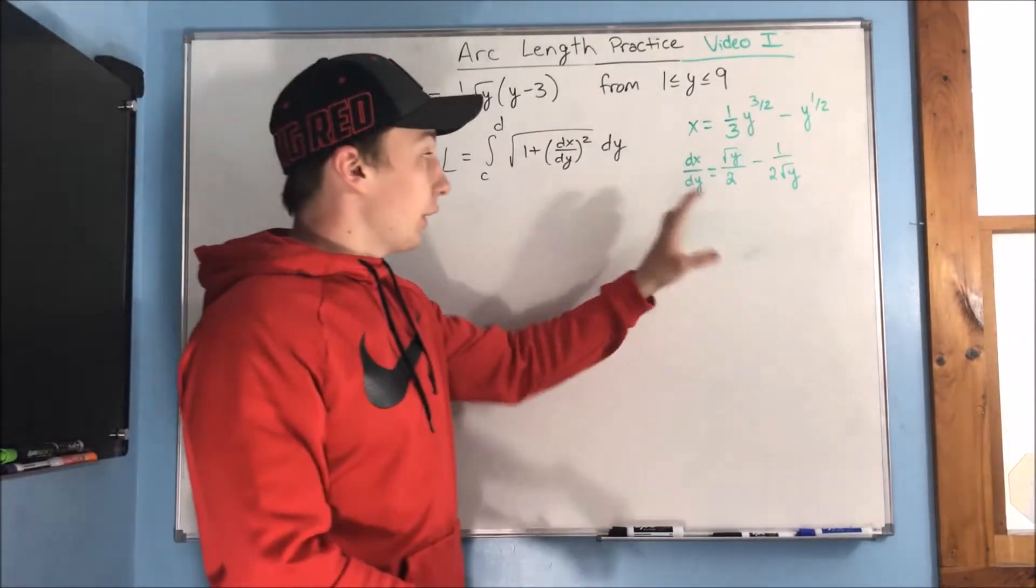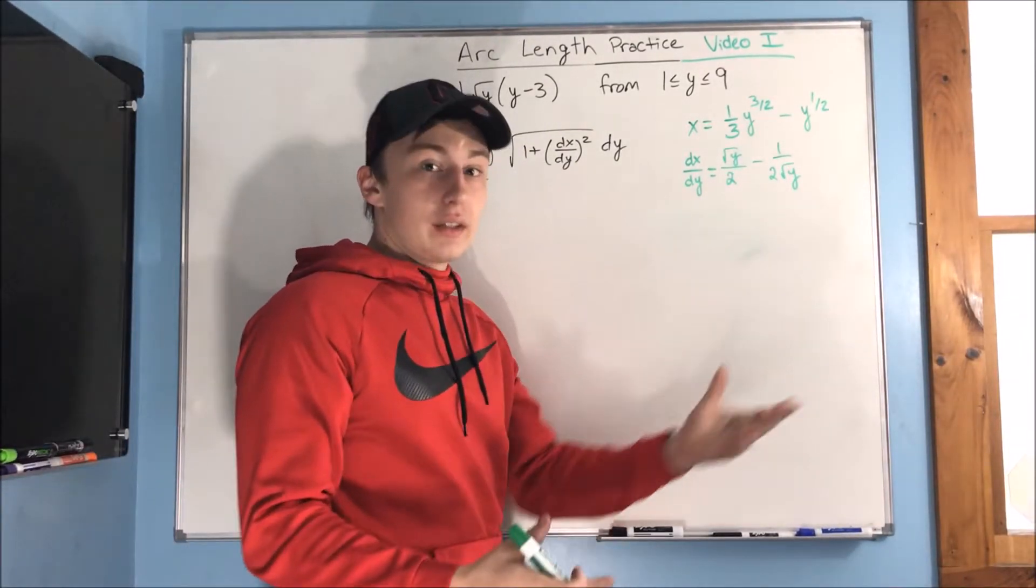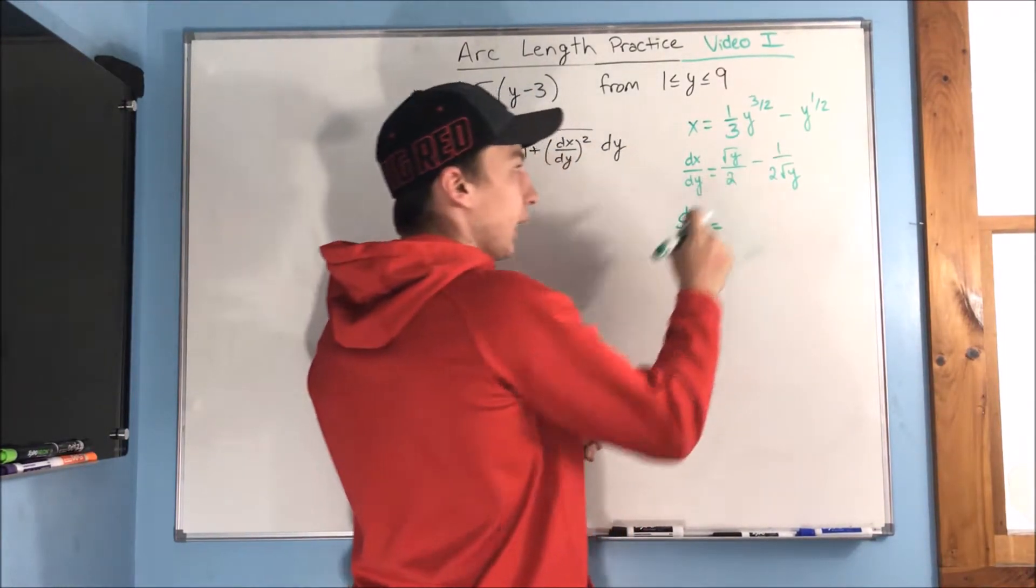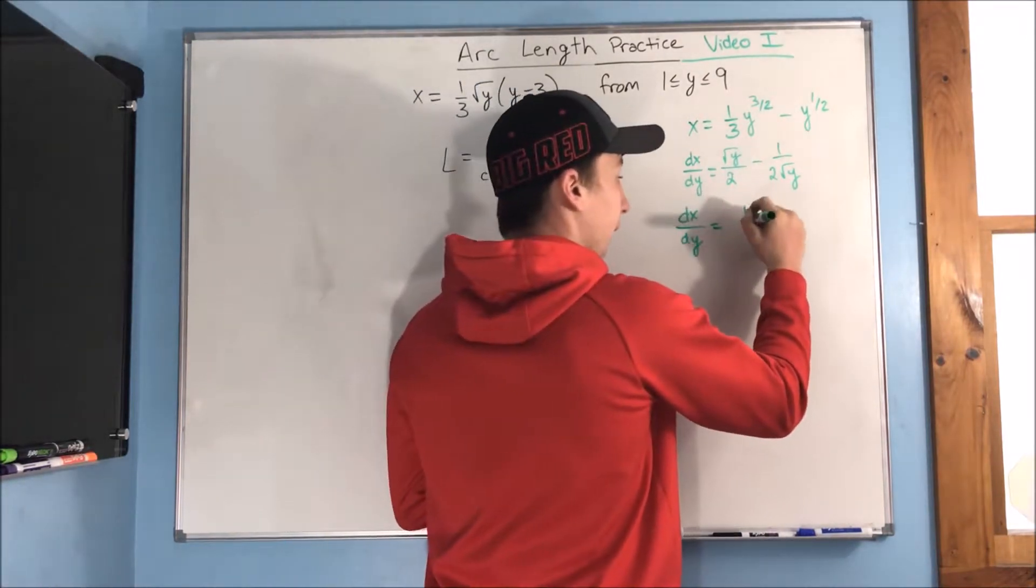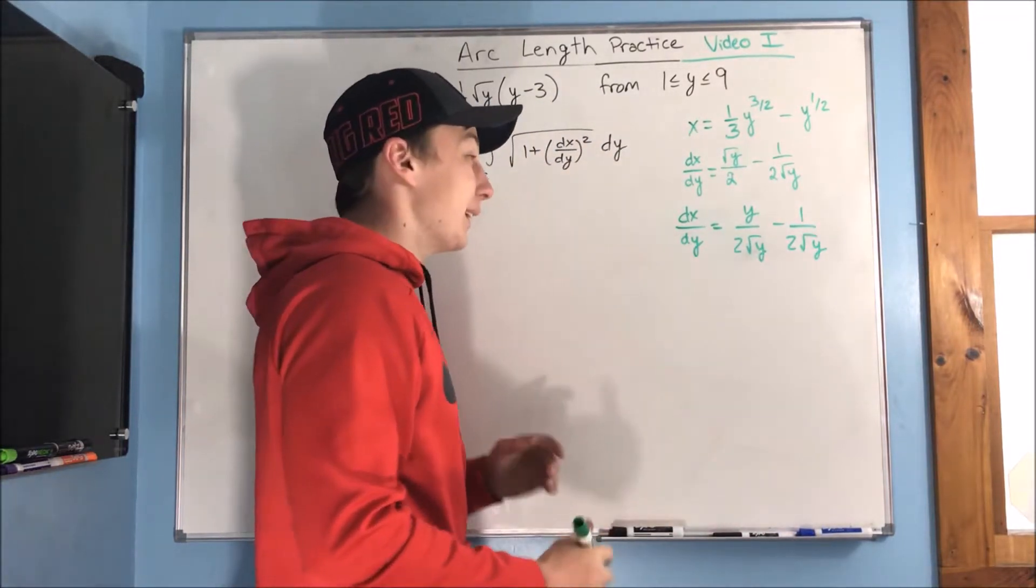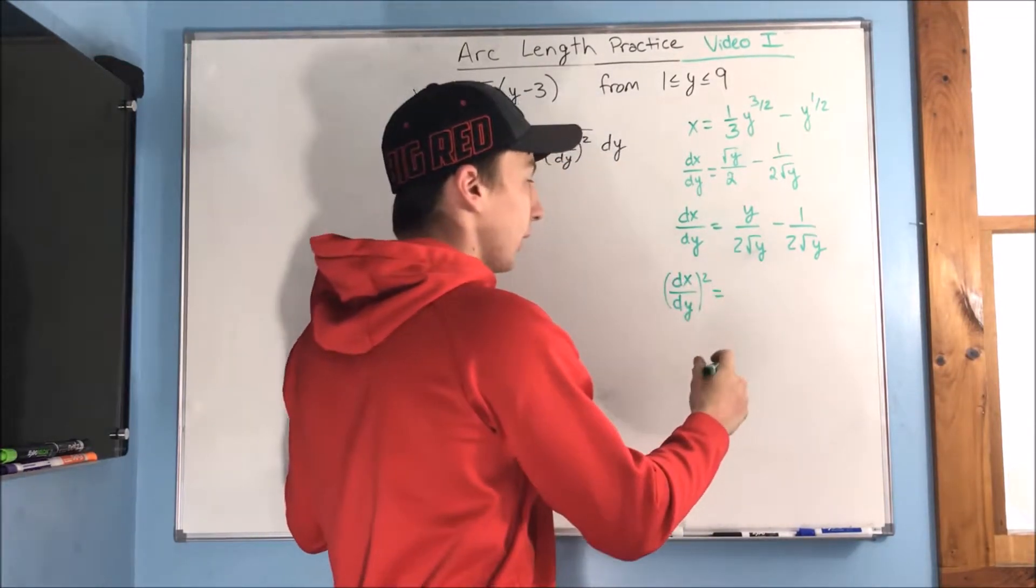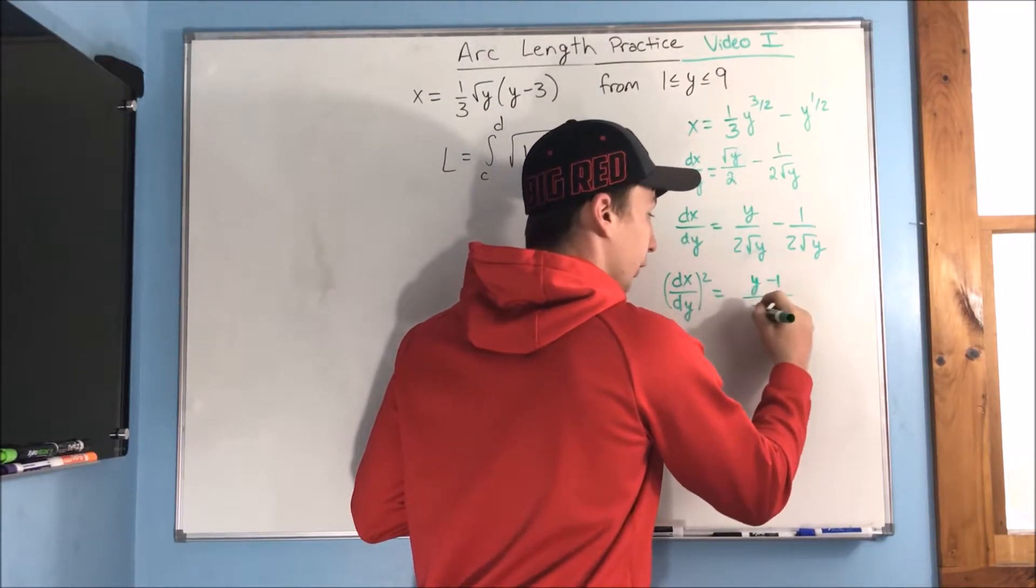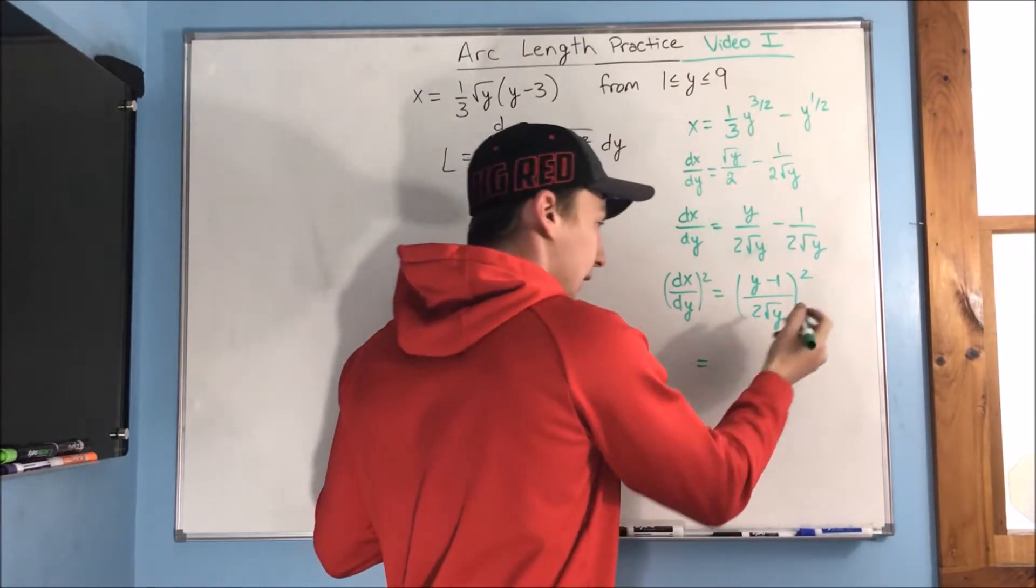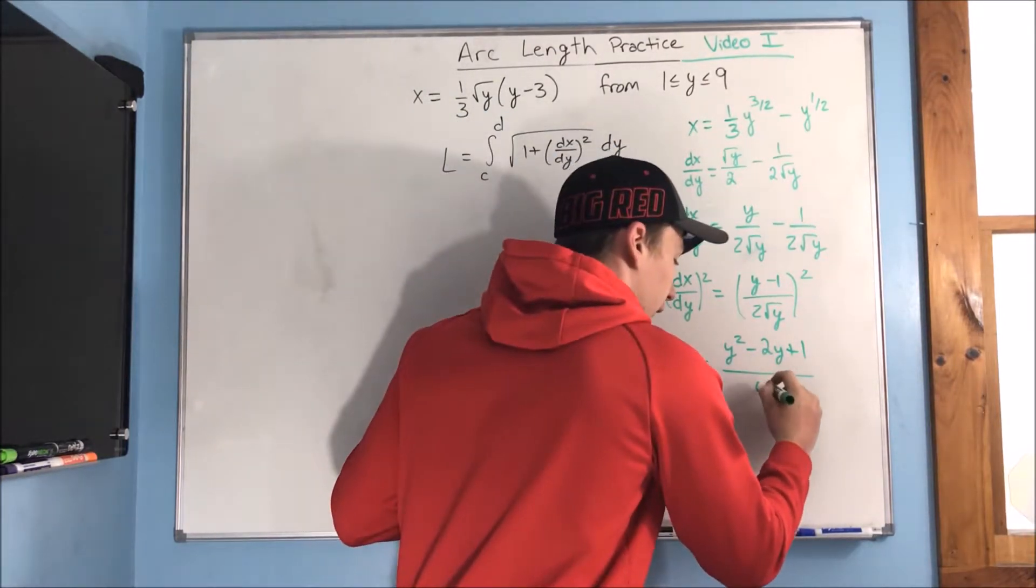So, before we actually go into squaring this, it actually would be a little bit nicer to find common denominators first. Because it's going to make the foiling a little easier. So, when we find common denominators, that's 2 rad y, we're going to get y over 2 rad y minus 1 over 2 rad y. And when we square this, it's a lot easier. Because we'll end up with dx dy squared equal to, well, this is just y minus 1 over 2 rad y, and this whole thing gets squared. So, that would end up equaling, we square the top, that's y squared minus 2y plus 1, we put that over 4y.